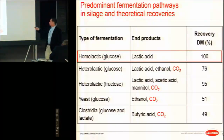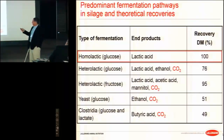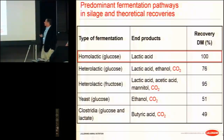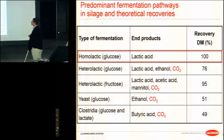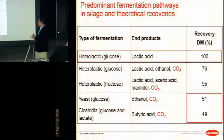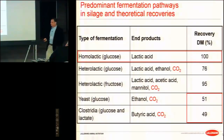Theoretically we have 100% recovery of dry matter in homofermentative conversion: six-carbon sugars convert to two molecules of lactic acid - three-carbon compounds - so you don't lose any dry matter in the form of CO2. Lactic acid is very desirable because it's about 10 times stronger than acetic acid or propionic acid. The heterofermentative bugs are beneficial but not as efficient as homofermentative and don't grow as fast. Yeast and clostridia produce nasty compounds like butyric acid with only about half the dry matter recovery.